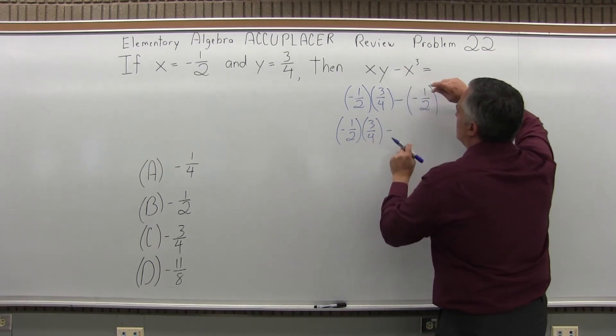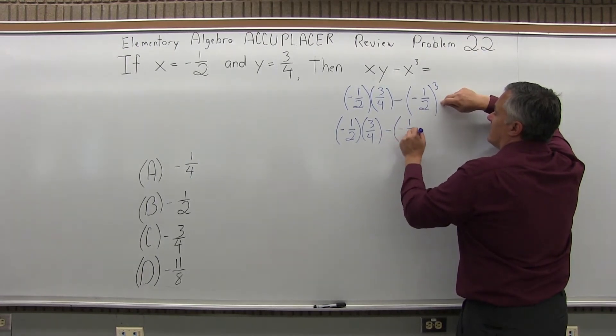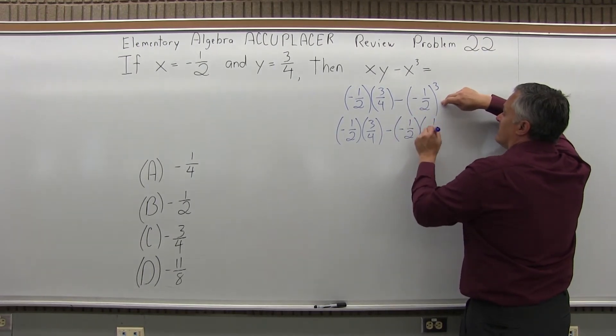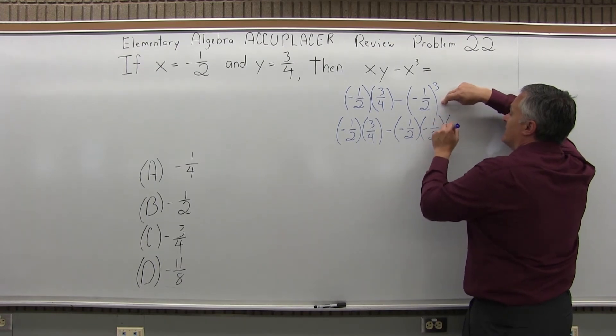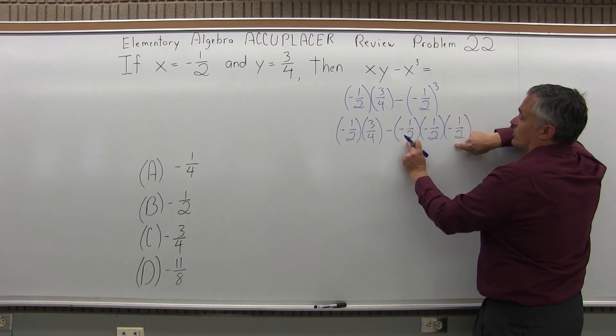Then we have minus. Now negative one-half to the third power is three negative one-halves multiplied together: negative one-half times negative one-half times negative one-half again. That's negative one-half to the third power.